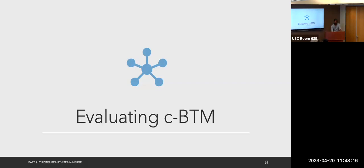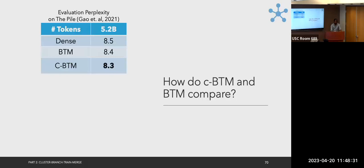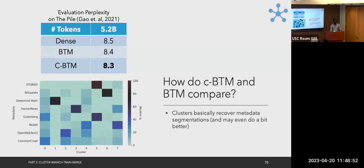Evaluating CBTM: first, does it hurt to use clustering instead of metadata? We trained CBTM on eight datasets from the Pile and compared it to BTM on the same data, finding pretty similar language modeling perplexity — in fact CBTM might do slightly better. A heat map aligning clusters with metadata shows that some datasets like stories and math align with a single cluster, while others like Common Crawl and OpenWebText align with multiple clusters, suggesting metadata may not provide the most optimal segmentation.